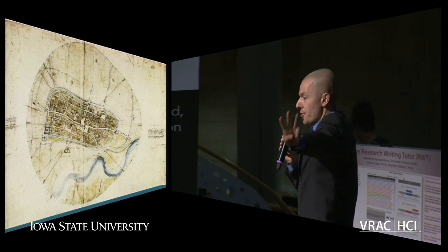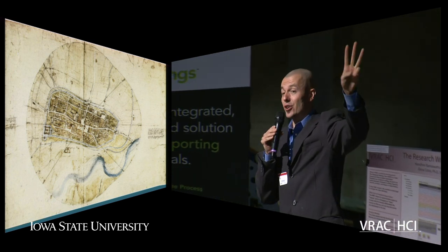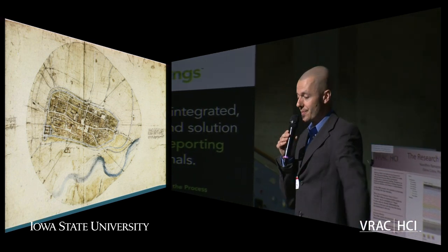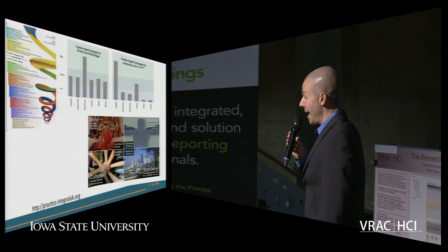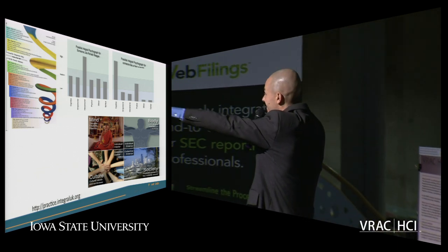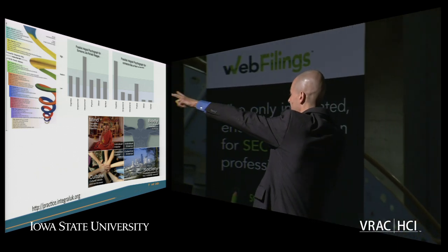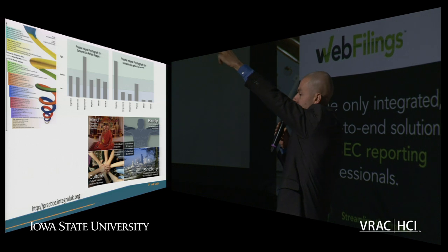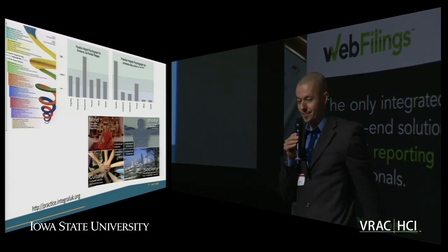So you're going to be introduced to three maps. The first map is Spiral Dynamics. The second map is Four Quadrants. And the third map is Lines and Levels.